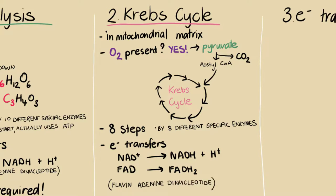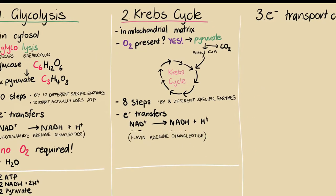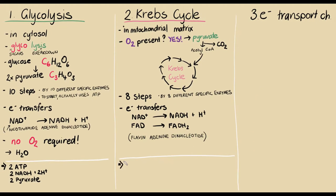So in the Krebs cycle, for one molecule of glucose that started out in glycolysis, we end up with another two molecules of ATP. So that's four we've now got. We have another eight molecules of NADH and two molecules of FADH. We also have six molecules of carbon dioxide.